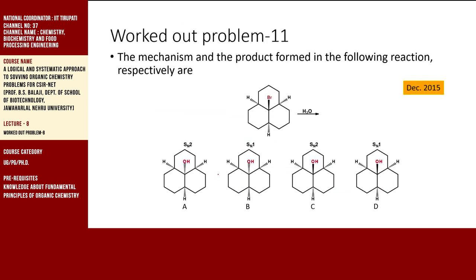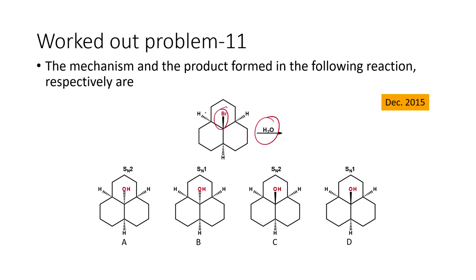Let us look at the next reaction. The mechanism and product formed in the following reaction — here we have a water molecule and here we have a bromine atom. When a bromo compound is treated with water, what reaction will generally happen? We are going to get a nucleophilic substitution reaction — that is the expected one. Looking at all the cases, we have either an SN1 reaction or an SN2 reaction, so there are only two possibilities.